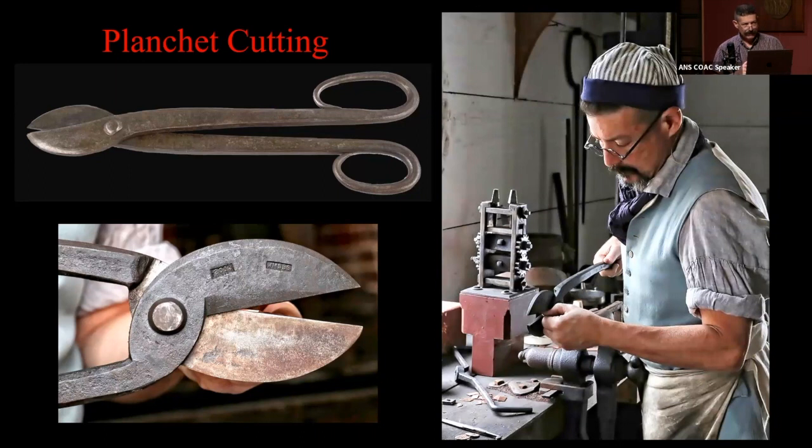What I believe they were doing to cut the planchets were, these guys were good. They were making thousands of coins. Like a jeweler's eye, you could gauge the thickness of a metal just by looking at it. I can. I can tell you, 16-gauge from 19-gauge sheet metal, just because I've worked with it in the production of these coins, they could do the same.